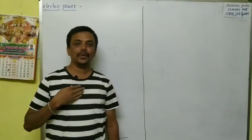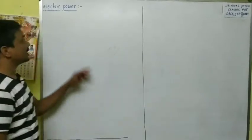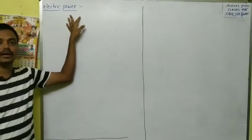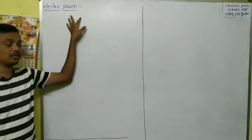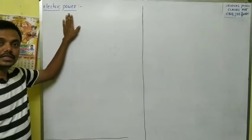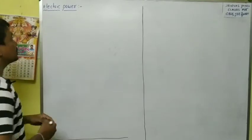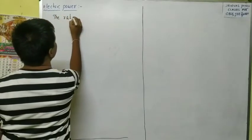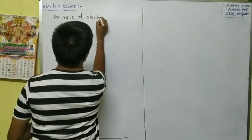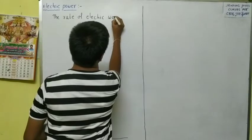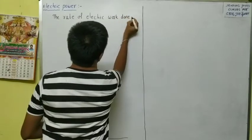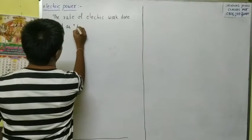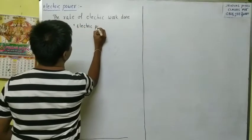Hi to all. Now I am going to start the last topic in current electricity, that is electric power. This topic you already learned in 10th class, but I will repeat it now. The definition of electric power is that it is the rate of electric work done. The rate of electric work done is called as electric power.